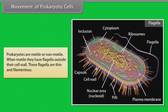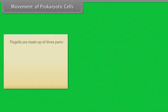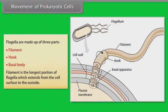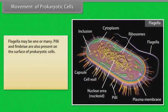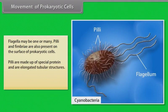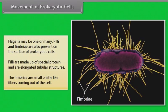Movement of prokaryotic cells: Prokaryotes are motile or non-motile. When motile, they have flagella outside their cell wall, which are thin and filamentous. Flagella are made up of three parts: filament, hook, and basal body. The filament is the longest portion, extending from the cell surface to the outside. Flagella may be one or many. Pili and fimbriae are also present on the surface of prokaryotic cells. Pili are elongated tubular structures made of special protein, while fimbriae are small bristle-like fibers coming out of the cell.